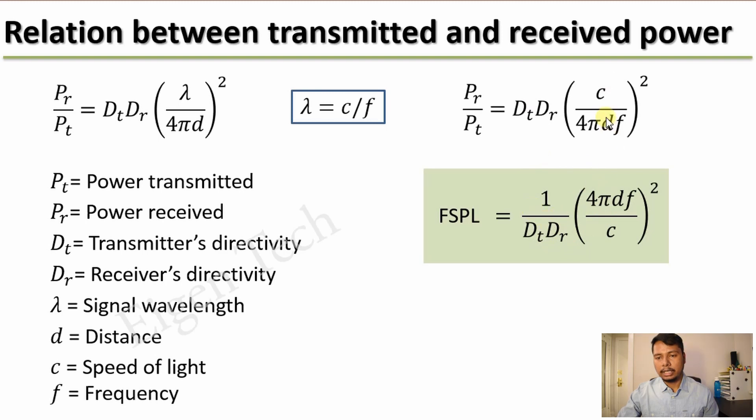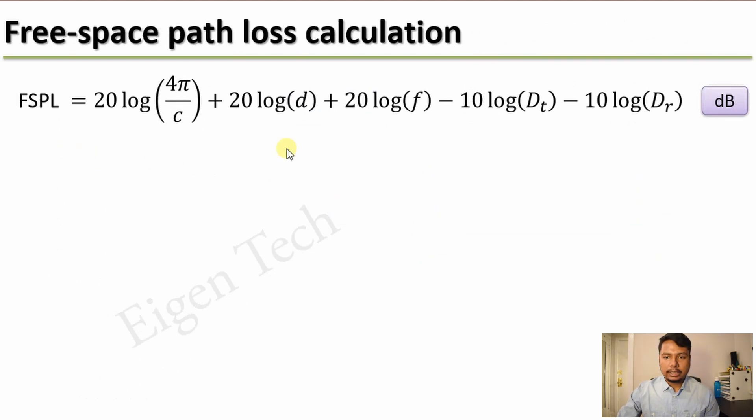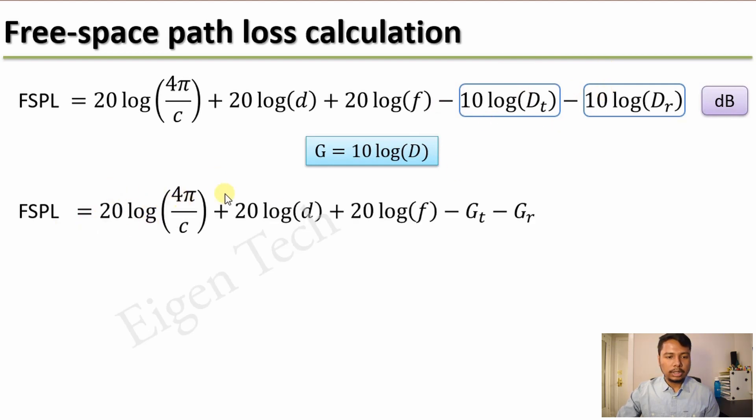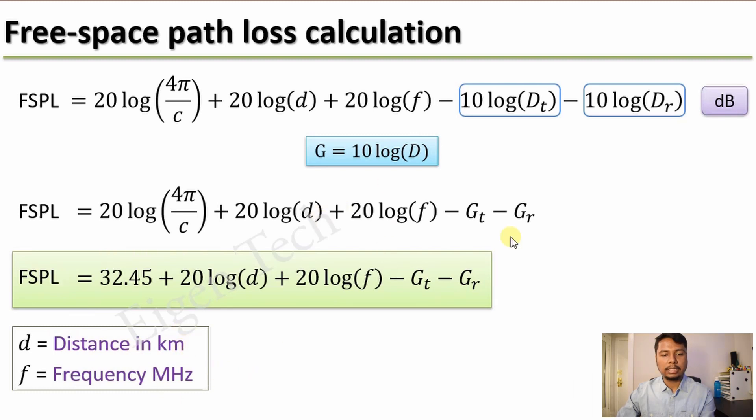However, this is in the linear unit and it is more useful to express FSPL in the logarithmic unit. So for that we take a logarithm of this expression and multiply that with 10 and then you get this expression after performing some math. Here these numbers 10 log of the directivity that is actually the gain of the antenna. Then using this expression, you can simplify it further. It becomes 20 log of 4 pi by c plus 20 log of distance, 20 log of f (the frequency), minus the gain of the transmitter, minus the gain of the receiver. This number is just a constant where c is the speed of light. You can also express d in kilometer and frequency in megahertz and then this becomes the final simplified expression.